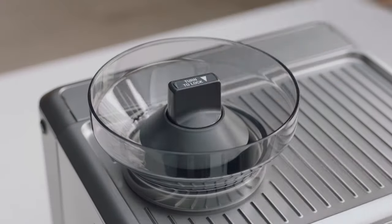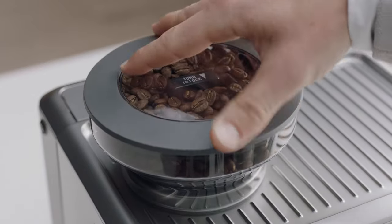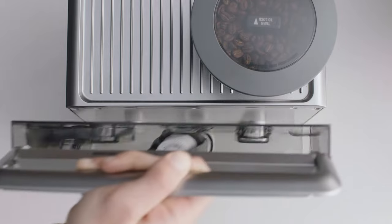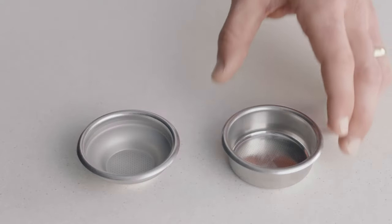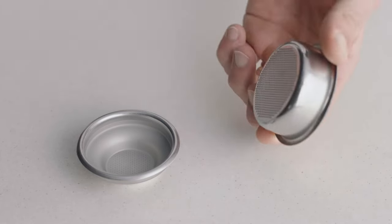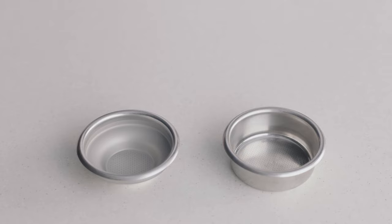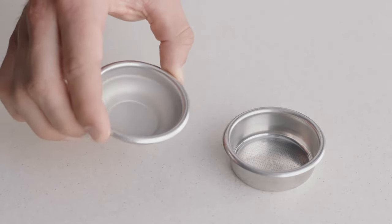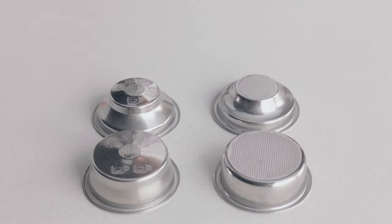Fit the bean hopper to the top of the machine like this, locking it into place. Place the water tank into the machine. Choosing the right filter basket to match your brew will help achieve a balanced coffee. Use a two-cup filter basket when making two coffees or when you want a stronger coffee. On the other hand, if you are making a single cup or a weaker coffee, use the one-cup filter basket.